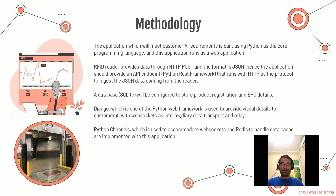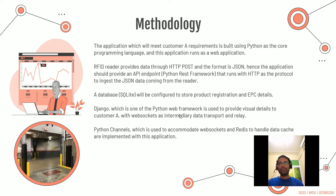EPC stands for Electronic Product Code — a unique identifier coded on RFID tags that are read by RFID readers. Django, a Python web framework, is used to provide visual details to customer A with WebSockets as intermediary data transport and relay. Python Channels is used to accommodate WebSockets, and Redis handles the data cache implemented within this application.